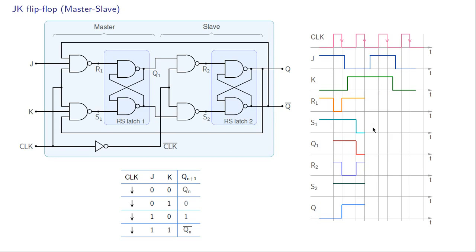When clock goes low, R1 and S1 are one so Q1 does not change. R2 equals Q1-bar, which is one; S2 equals Q1, which is zero. With R2 equal to one and S2 equal to zero, Q is reset to zero—the output of the slave latch.